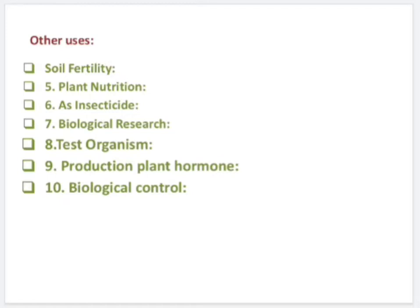Use of fungi as test organisms. Some strains of Aspergillus niger have been used to detect trace elements like zinc, copper, and molybdenum. Even if the substances are present in very minute concentrations in the substrate, these elements when absorbed by the fungus give a particular color to the conidia. Similarly, Neurospora crassa has been used to detect vitamin B complex. Use of fungi in production of plant hormone. Some fungi are used to produce plant hormones like gibberellin, produced by the soil fungus Gibberella fujikuroi.